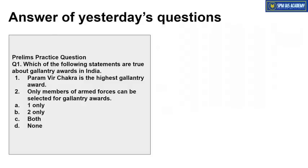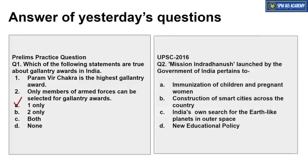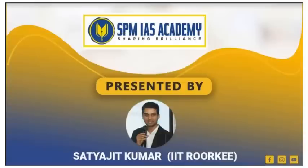Ab kal jo humne aapko practice question diya tha — Gallantry Awards se related — uska answer dekhte hain. Param Vir Chakra is the highest gallantry award — absolutely right. But the statement that only members from armed forces can be selected for gallantry awards is wrong; members from paramilitary forces can also be given gallantry awards. So the correct answer is Option A — one only. Mission Indra Dhanush is an immunization program for children and pregnant women. That's all from our side for today. Thanks for watching.